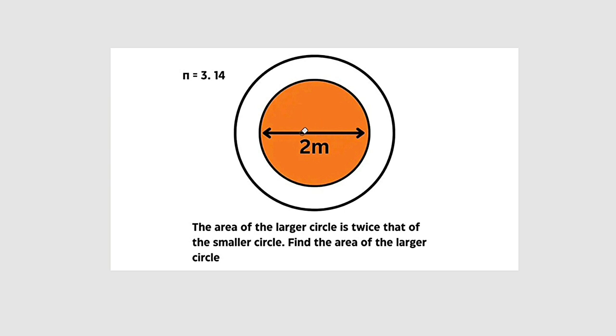The diameter of the smaller circle is given as 2 meters. So what we are required to find here is the area of this larger circle. The only relationship between the smaller circle and the bigger circle is that the bigger circle is twice as big as the smaller circle.